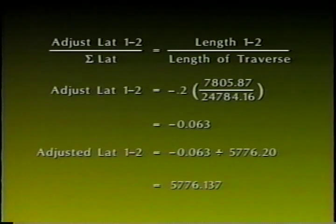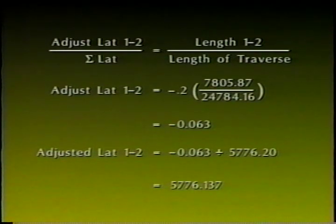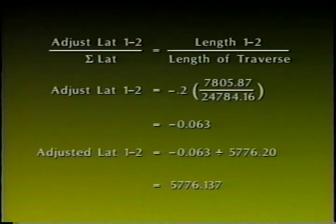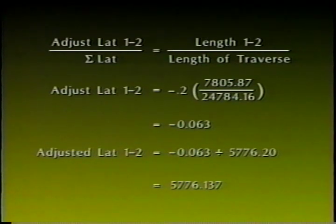In the following example, the latitude correction for traverse line 1-2 is shown. The adjustment in latitude to traverse leg 0.1 to 0.2 divided by the traverse misclosure in latitudes is proportional to the length of leg 0.1 to 0.2 divided by the total length of the traverse. It is important to keep track of the algebraic sign of the functions you are using.